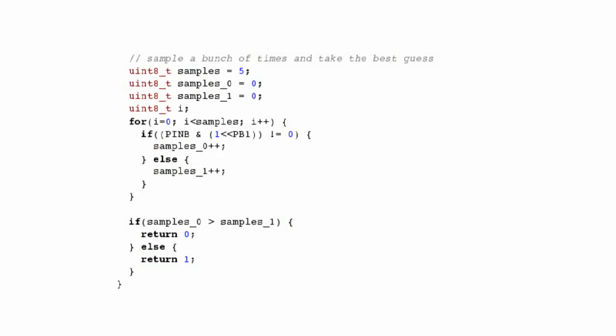We sample the data line for each bit a few times in quick succession and take the majority winner, just to reduce the impact of temporary glitches. This code also has to keep in mind the level shifting circuit we showed earlier actually turns 0s into 1s and 1s into 0s, so we have to flip them back to make any sense of the data coming at us.